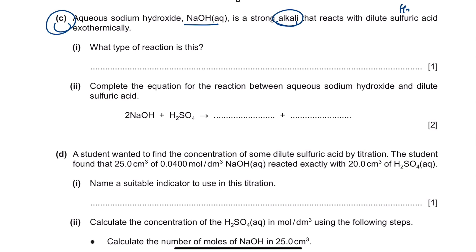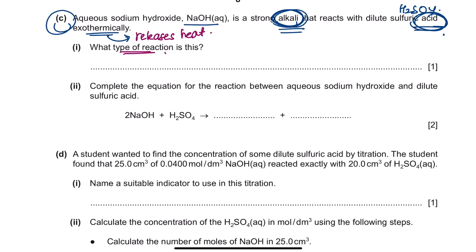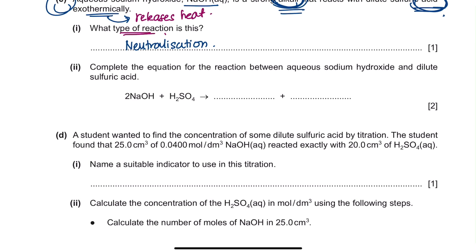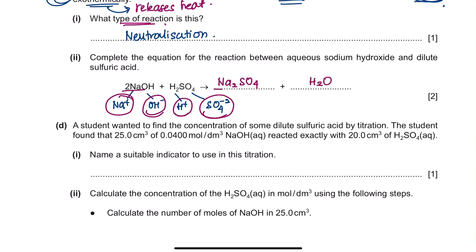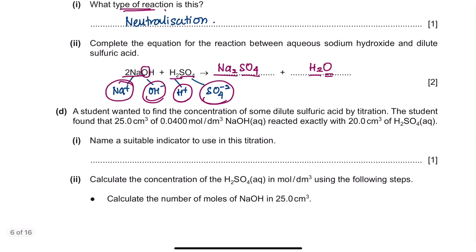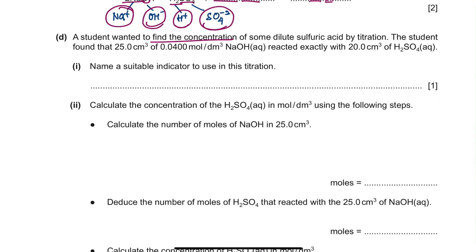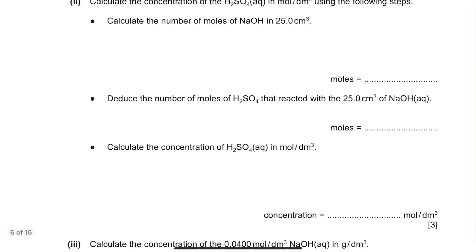Aqueous sodium hydroxide is a strong alkali that reacts with dilute sulfuric acid exothermically. Name the type of reaction: since an alkali reacts with an acid, this is a neutralization reaction. Complete the equation for sodium hydroxide and sulfuric acid: sodium ions combine with sulfate ions to form Na2SO4, and H+ reacts with OH⁻ to give H2O. Check the balance: 2 Na on each side, 1 SO4 on each side, 2 H and 1 oxygen — the equation is balanced. The next question about finding concentration has been covered in previous videos.